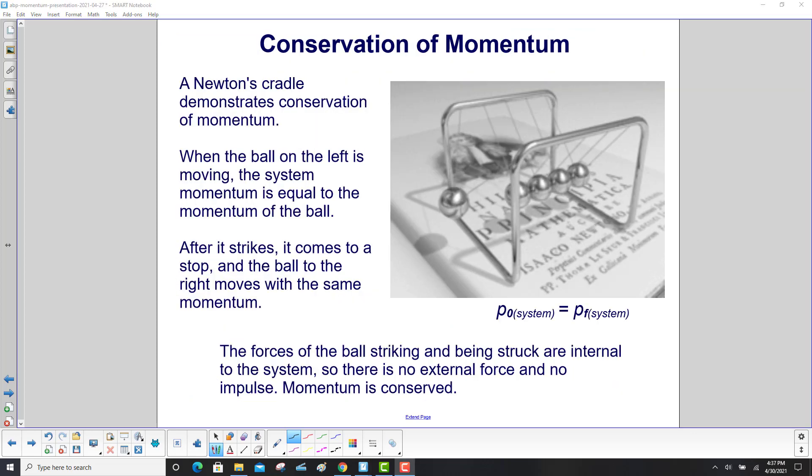A Newton's cradle demonstrates conservation of momentum. When the ball on the left is moving, the system momentum is equal to the momentum of the ball. After it strikes, it comes to a stop, and the ball to the right moves with the same momentum. The forces on the ball striking and being struck are internal to the system, so there is no external force and no impulse. Momentum is conserved.